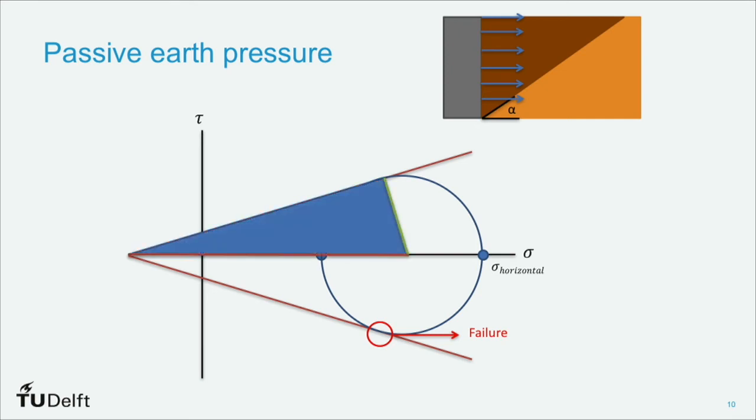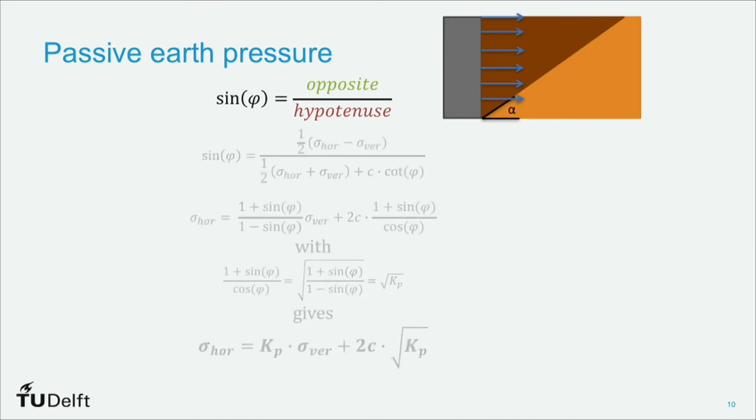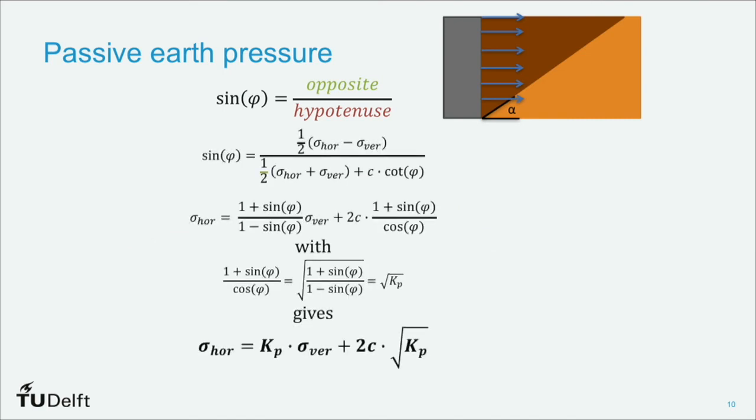So if we use trigonometry, we can draw a right angle triangle, intercepting with the center of the circle, and where the Mohr's circle and the Mohr-Coulomb failure interact, we can calculate various parts of this circle. So if we calculate the sine of phi, which is the opposite over the hypotenuse, we use this trigonometry.